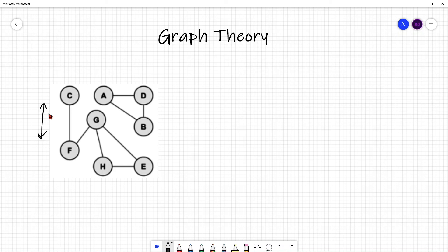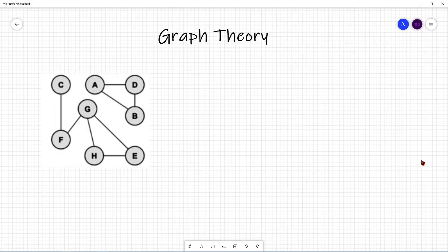So, that's the difference between directed edges and undirected edges. And there can be directed graphs, which are graphs with directed edges, and there can be undirected graphs, which are graphs with undirected edges.